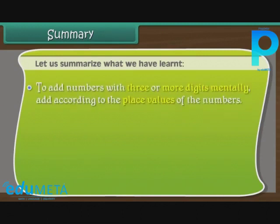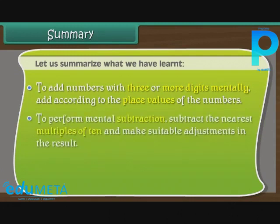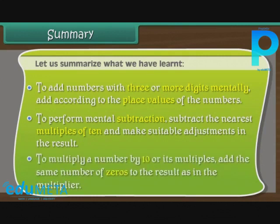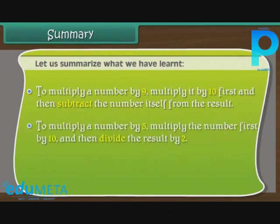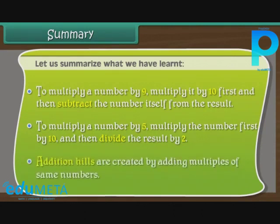To add numbers with 3 or more digits mentally, add according to the place values of the numbers. To perform mental subtraction, subtract the nearest multiples of 10 and make suitable adjustments in the result. To multiply a number by 10 or its multiples, add the same number of zeros as in the multiplier. To multiply a number by 9, multiply by 10 first then subtract the number itself. To multiply a number by 5, multiply by 10 first and then divide the result by 2. Addition Hills are created by adding multiples of the same numbers.